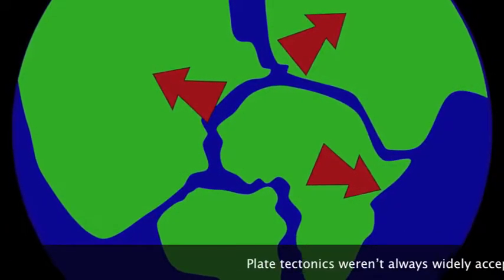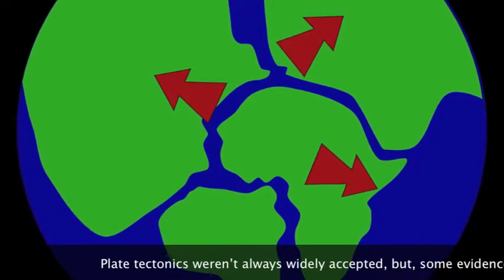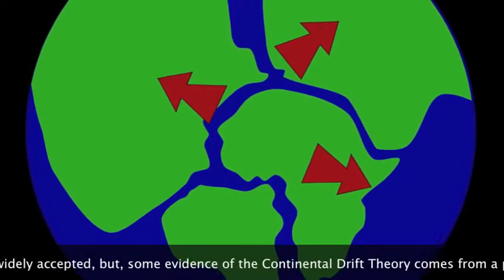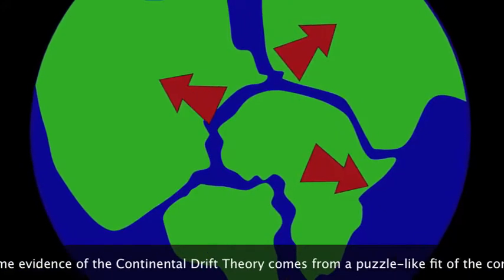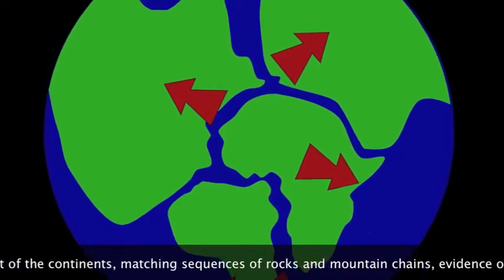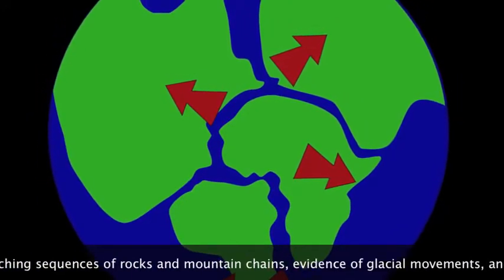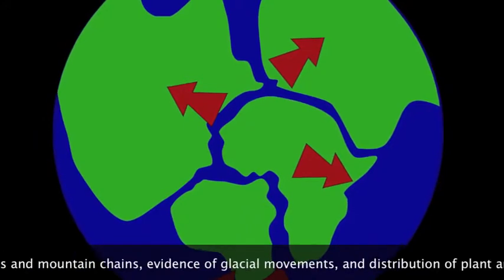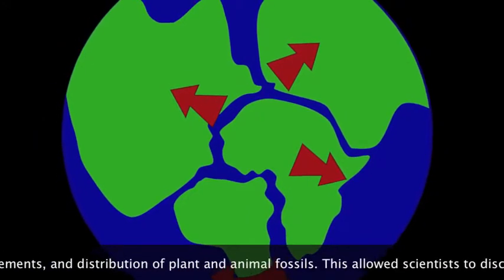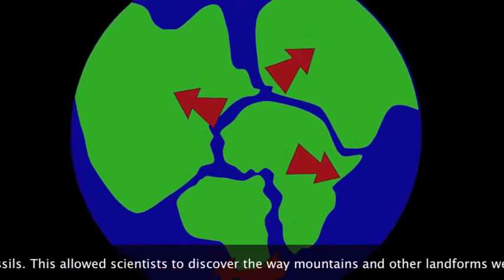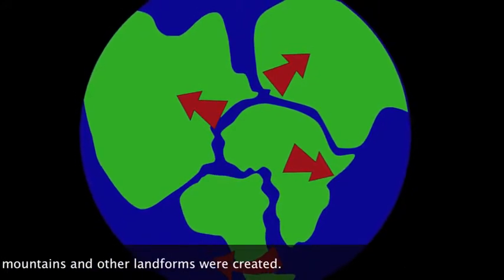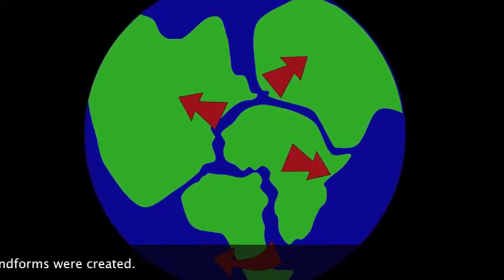Plate tectonics weren't always widely accepted, but some evidence of the continental drift theory comes from a puzzle-like fit of the continents, matching sequences of rocks and mountain chains, evidence of glacial movements, and distribution of plant and animal fossils. This allowed scientists to discover the way mountains and other landforms were created.